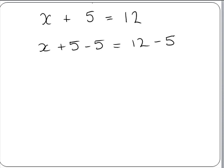Again, plus 5 and minus 5 will give us 0. And on the right hand side we have 7. So we are left with x is equal to 7. Our equation is solved.